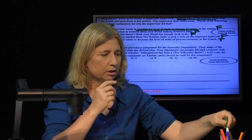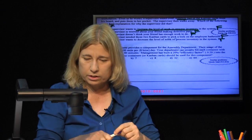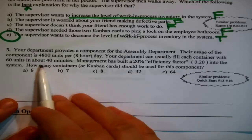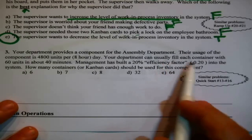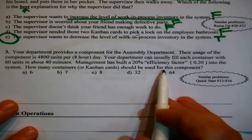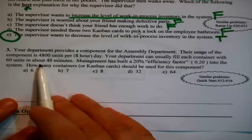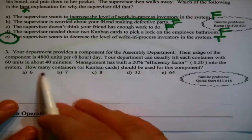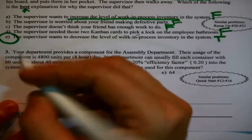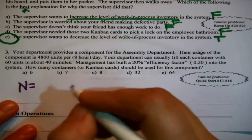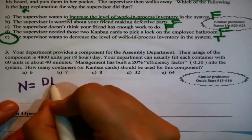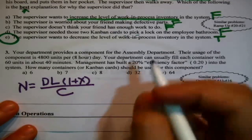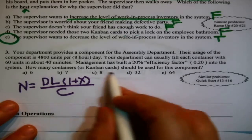The next one is the only vaguely quantitative question here. Your department provides a component for the assembly department. Their usage of the component is 480 units per eight-hour day. Your department can usually fill each container with 60 units in about 40 minutes, and there's some sort of efficiency factor. How many containers or cards should be used for this component? This is a classic invitation to use Toyota's formula.